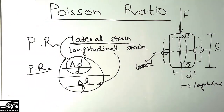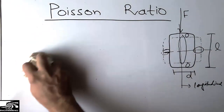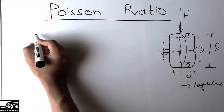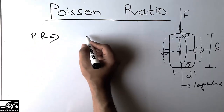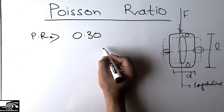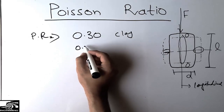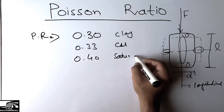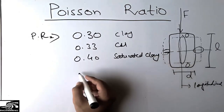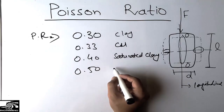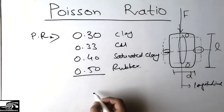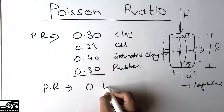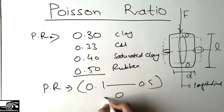The Poisson ratio shows the ductility of a material — you can say the elasticity of the material. The more the Poisson ratio of a material, the more elastic the material is. Here is a list of Poisson ratios for some materials: clay has a Poisson ratio of 0.30, copper has 0.33, saturated clay has 0.40, and the maximum Poisson ratio is that of rubber, having a Poisson ratio of 0.50.